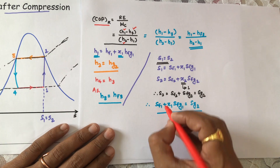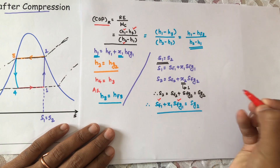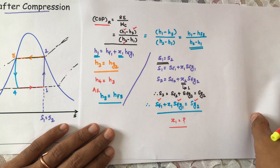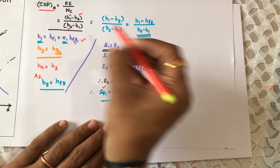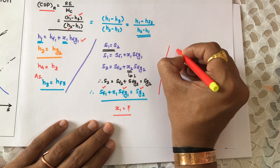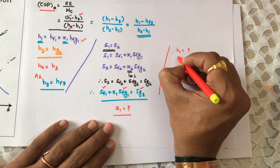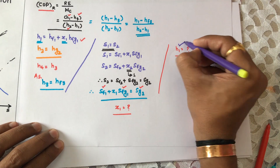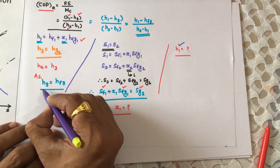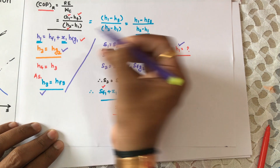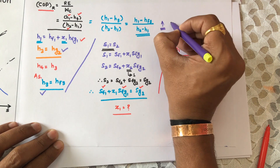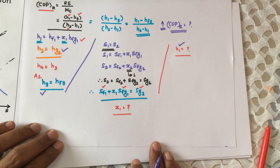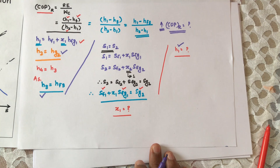Since s1 = s2, we get: sf1 + x1 · sfg1 = sg2. From this equation we can solve for x1. Substituting x1 into h1 = hf1 + x1 · hfg1 gives us h1. Knowing h1, h2 = hg2, and h3 = hf3, we can easily calculate the COP of the refrigerator. This completes the analysis of the dry saturated vapor after compression cycle.